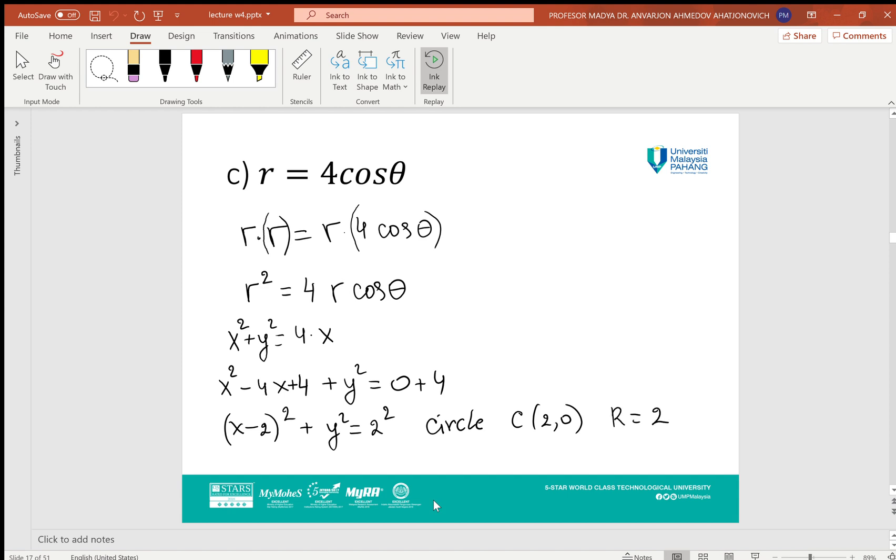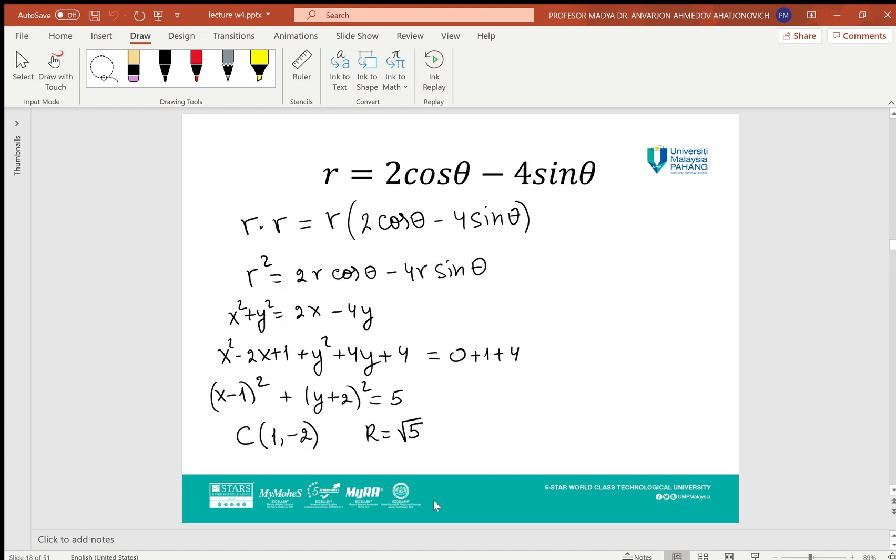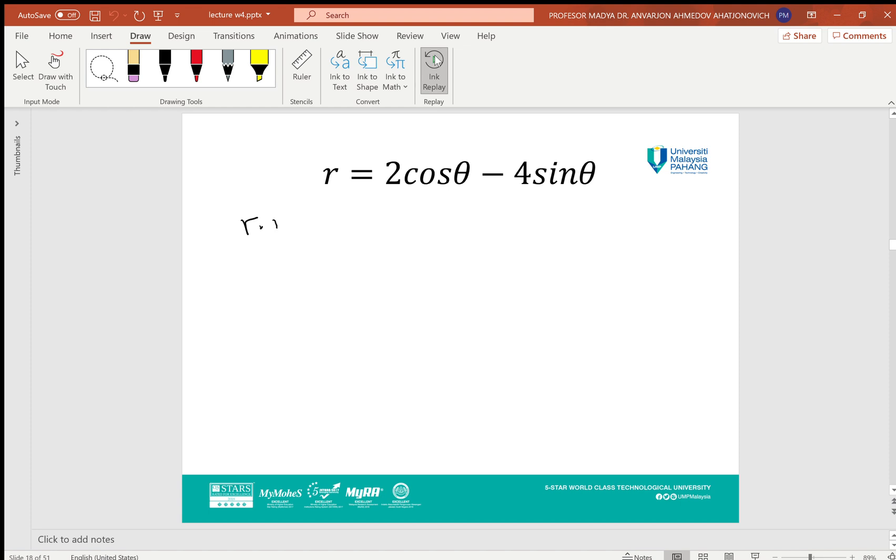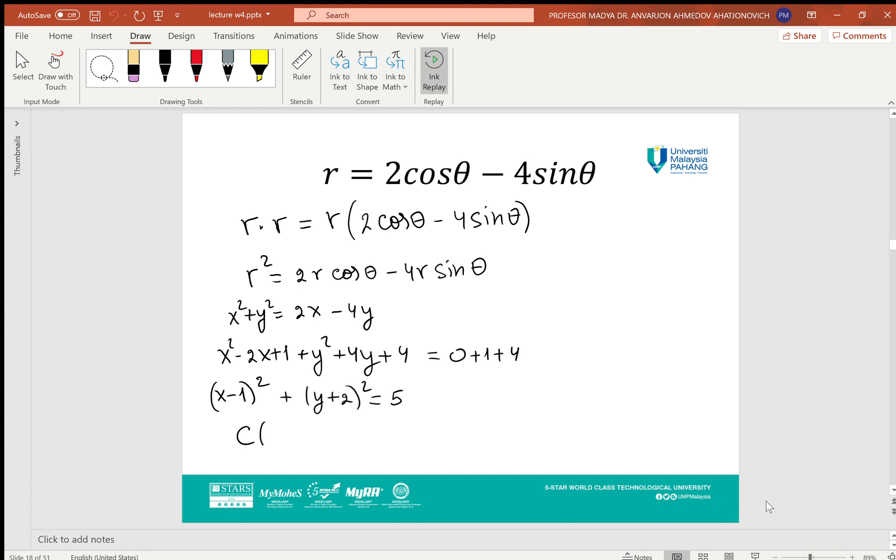The last example: r = 2 cos θ - 4 sin θ. This one is a little bit different, but the idea is the same. We multiply both sides by r again, then apply the definitions of x and y in polar coordinates. The left side will be r², and the right side will be 2r cos θ - 4r sin θ. We replace r cos θ by x and r sin θ by y. Then take all expressions to the left side and complete the squares to get the equation of a circle. We add 1 and 4 to both sides, which gives the equation of a circle of radius √5 centered at (1, -2).